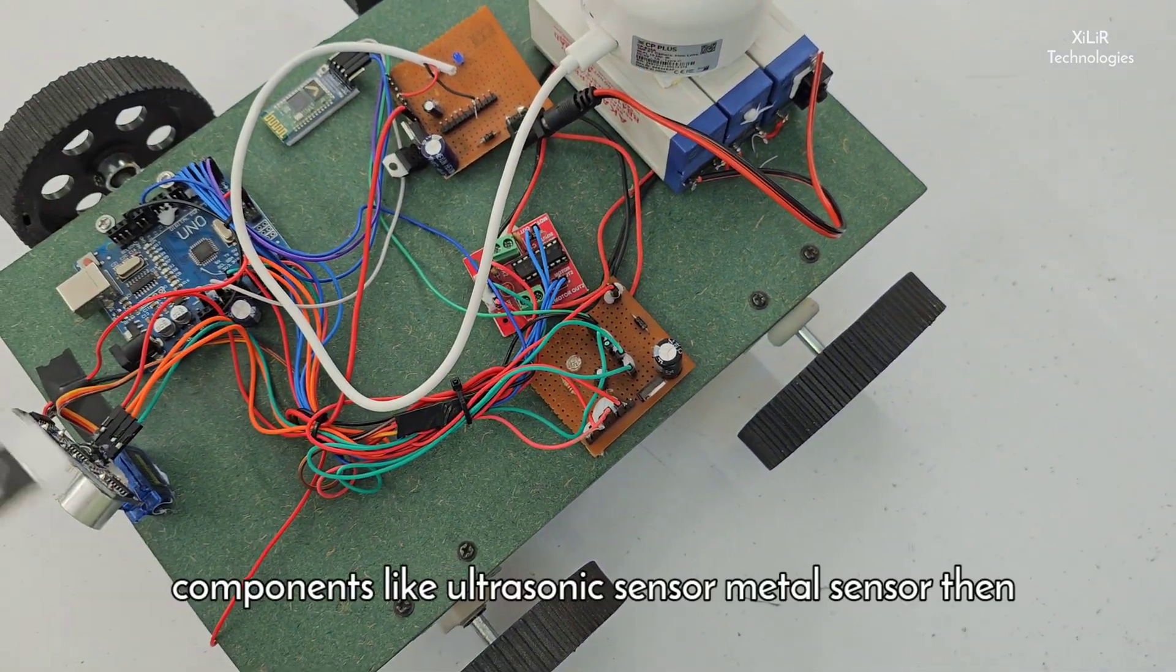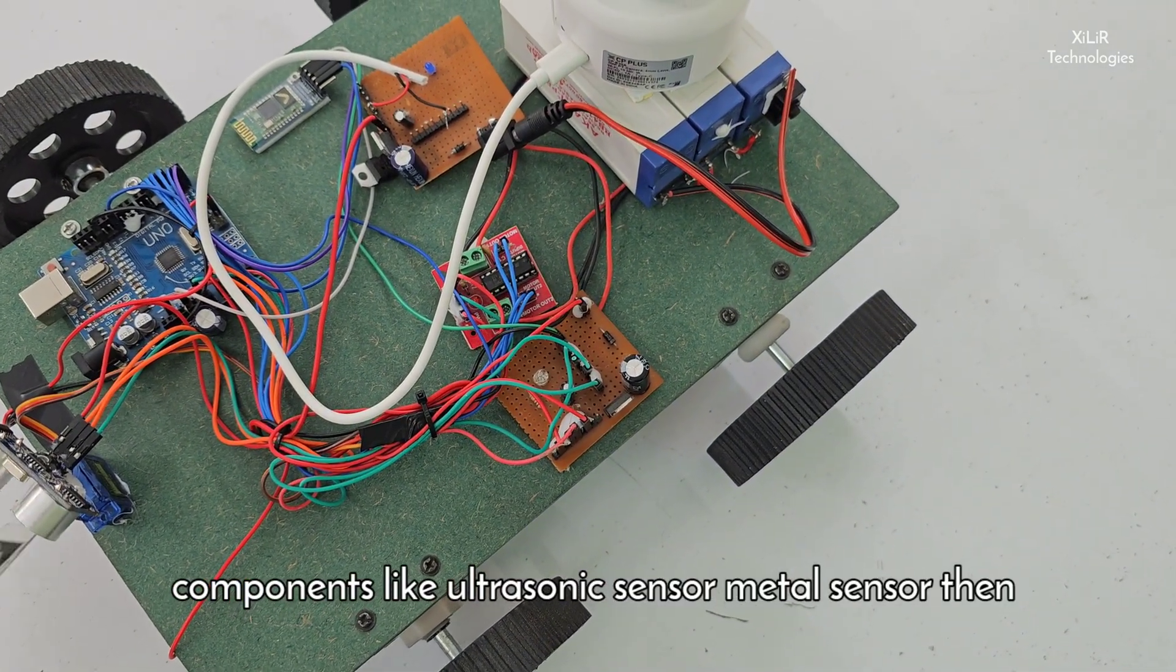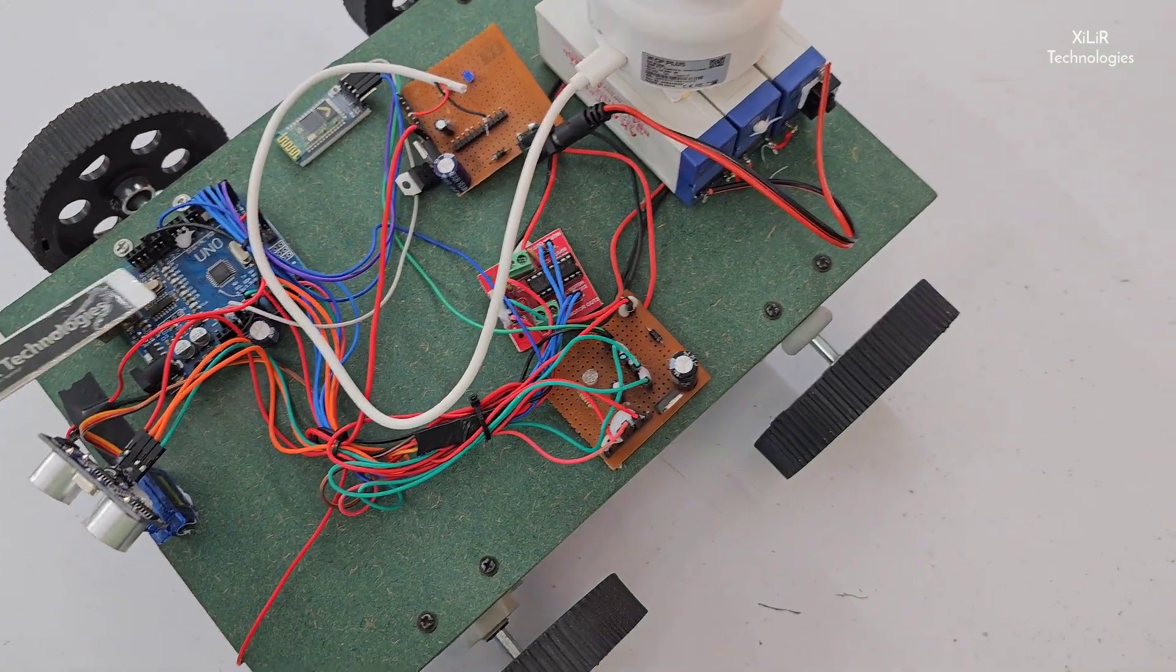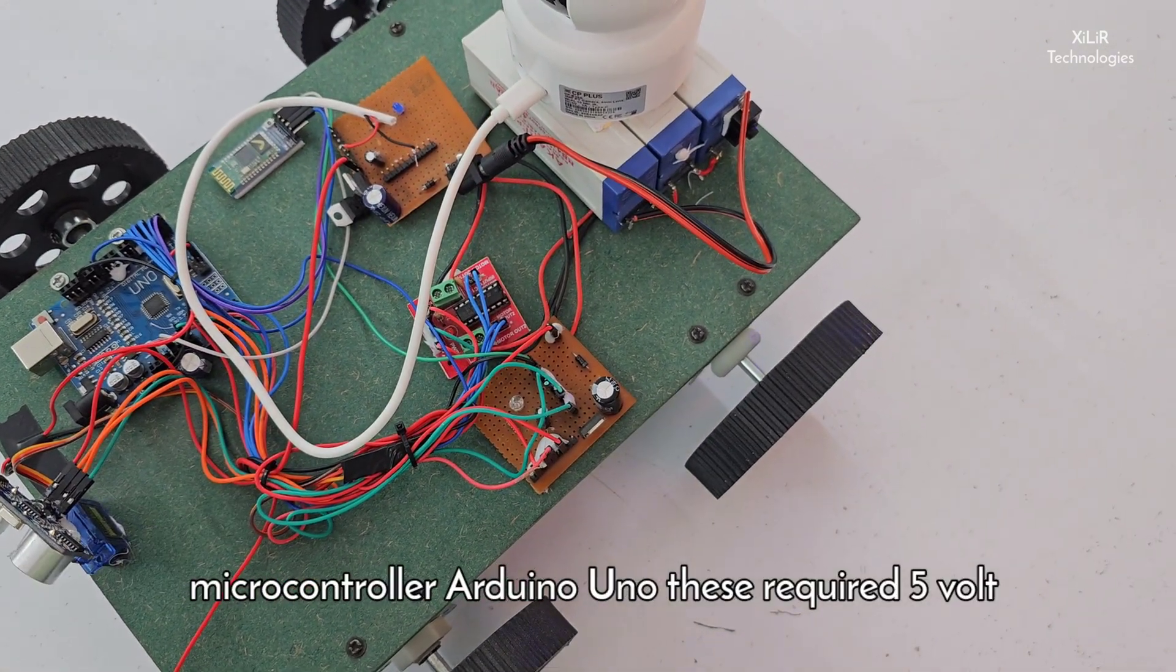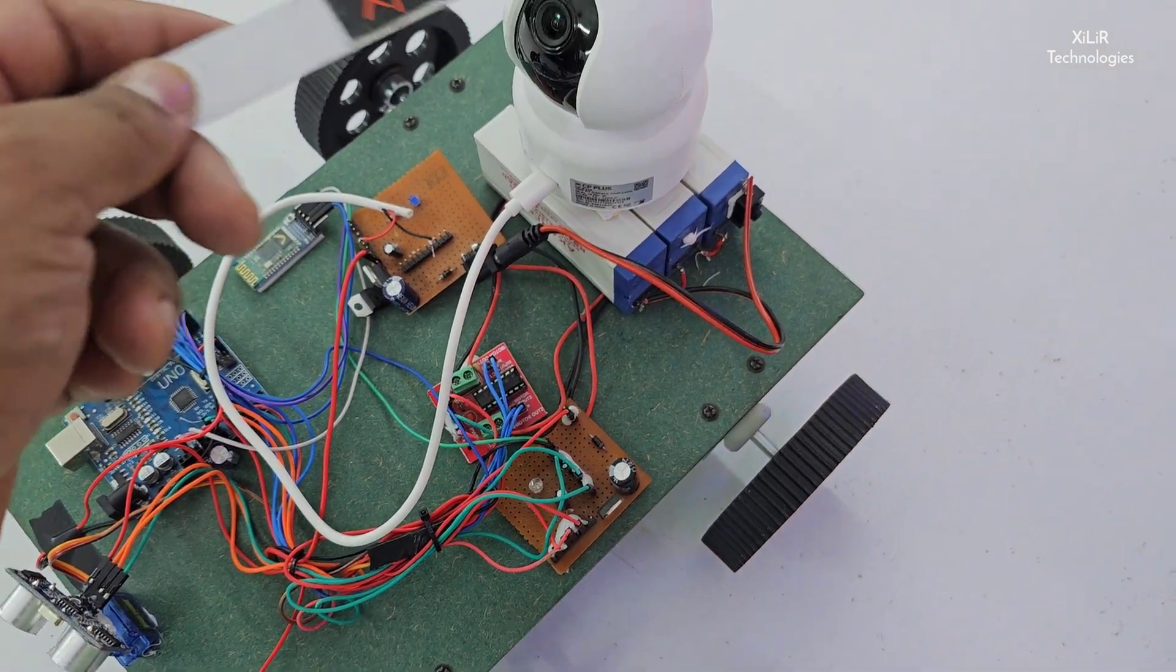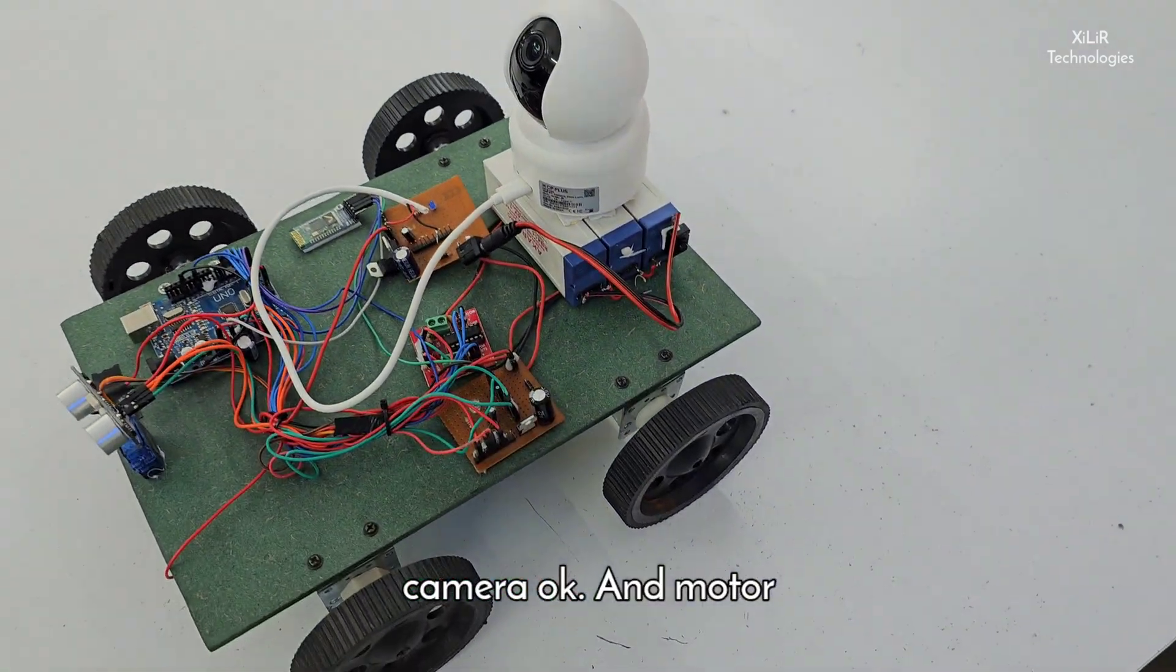Like ultrasonic sensor and metal sensor, then we have Bluetooth module, servo motor, microcontroller Arduino Uno - these required 5 volt. And different 5 volt here, dedicated 5 volt for this camera.